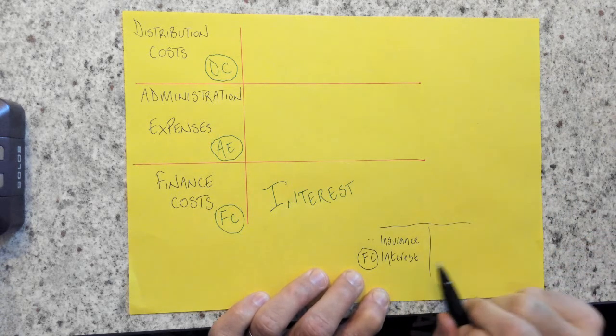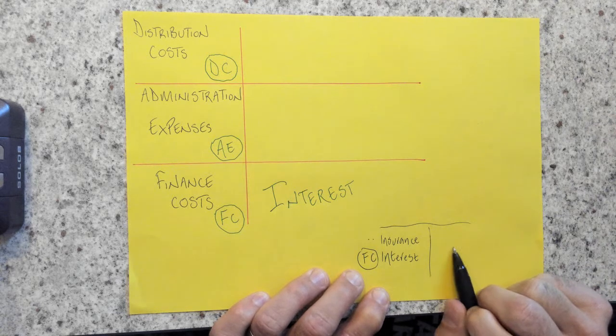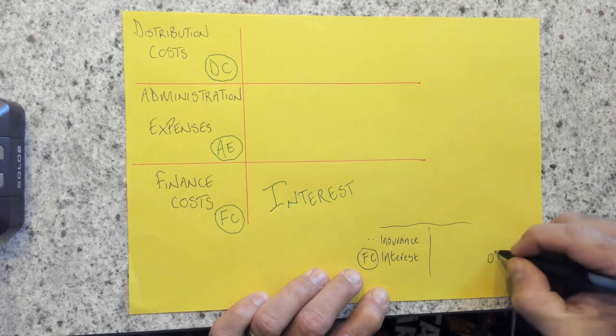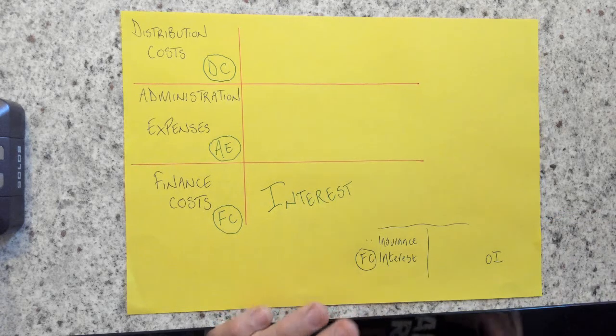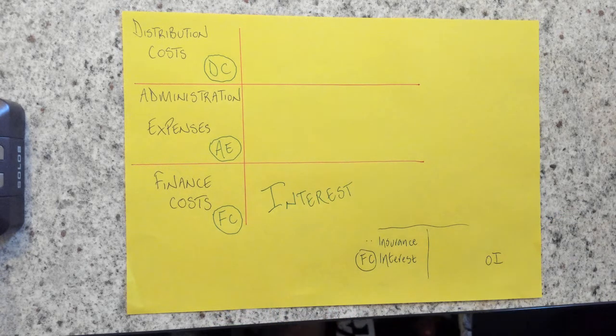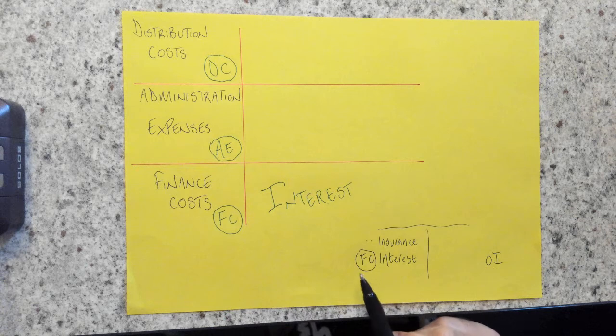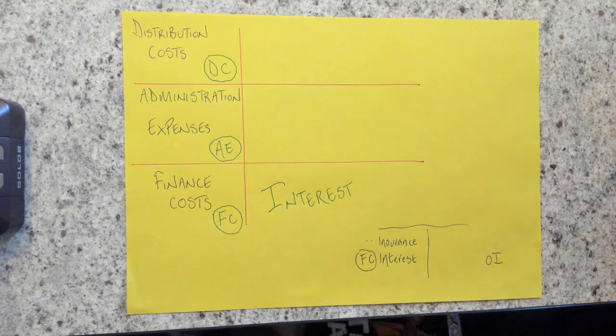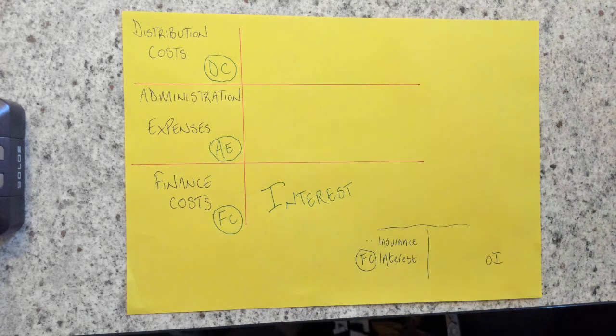Of course, we can actually have interest on this side. And if we have interest on this side, it's going to be a form of other income, because of course, interest is a reward for saving. Or it's the cost of borrowing, which would be here. So I tend to look for the finance cost first.